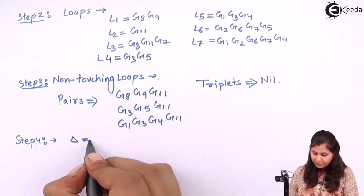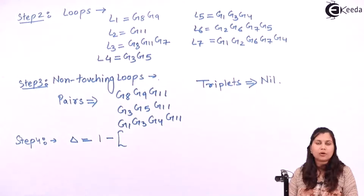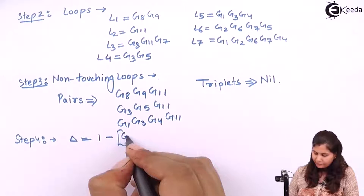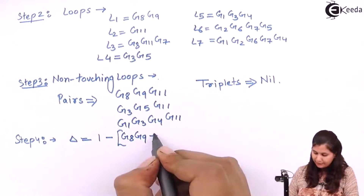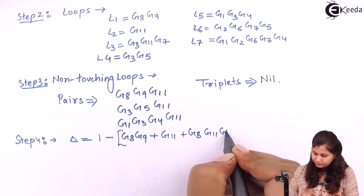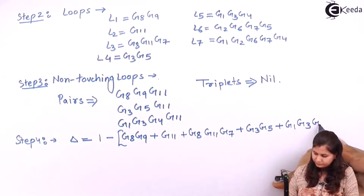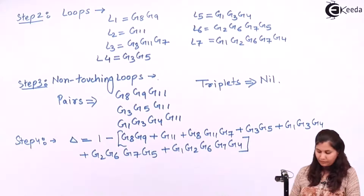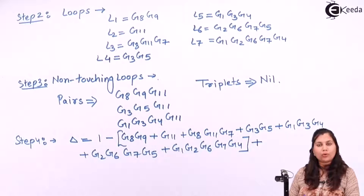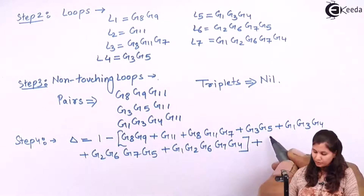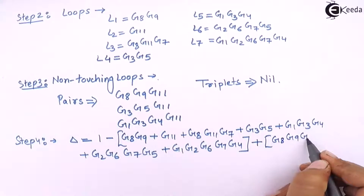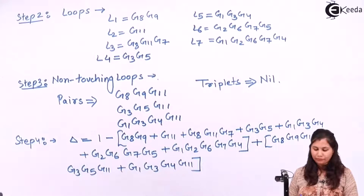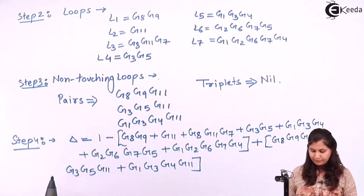Step 4: find out Δ, the graph determinant. It is given by 1 minus the sum of the gains of all individual loops: g8·g9, g11, g8·g10·g7, g3·g5, g1·g3·g4, g2·g6·g7·g5, g1·g2·g6·g7·g4 — plus the sum of the gains of all pairs of non-touching loops: g8·g9·g11, and the remaining pairs. This is the value of Δ.